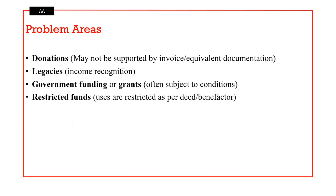What are some of the problem areas that we anticipate in non-trading organizations? Number one: donations. Donations may not be supported by invoice or equivalent documentation. Donations may not be supported by source documents. This may send a signal that the books of a charity, NGO, or non-trading organization may not be relied upon.